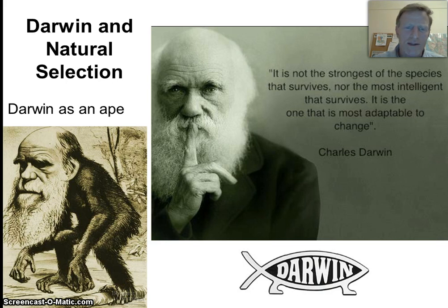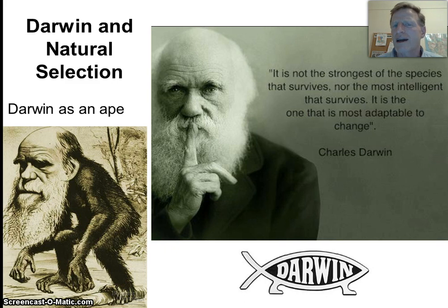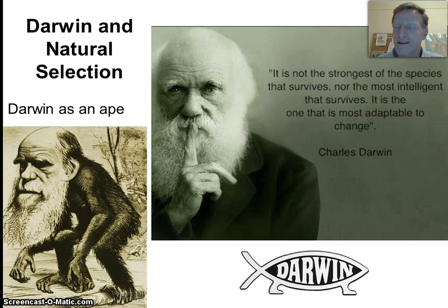Here's a picture of Darwin as an ape. You can see he was very controversial in 1859 and shortly after when he published his book. He's still controversial today, which seems surprising, but there are people that still don't accept Darwin's theories. But let's talk about him anyway.